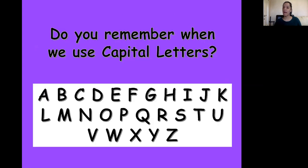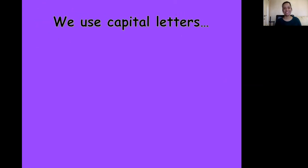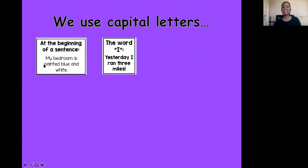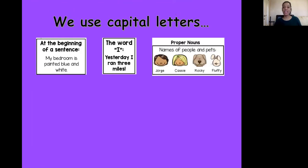Do you remember when we use capital letters? We use capital letters at the beginning of a sentence, always. We always use a capital letter at the beginning of a sentence. When I say the word I — not the letter I, the word I — for example: Yesterday I ran three miles. I am Miss Carolina. Proper nouns means the names of people, pets. Carolina is a capital letter. Your name is a capital letter. Lola's name is a capital letter.